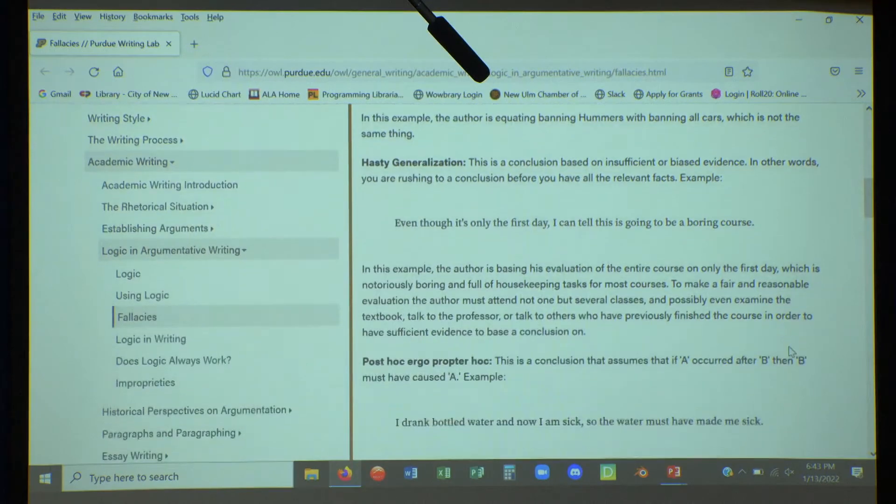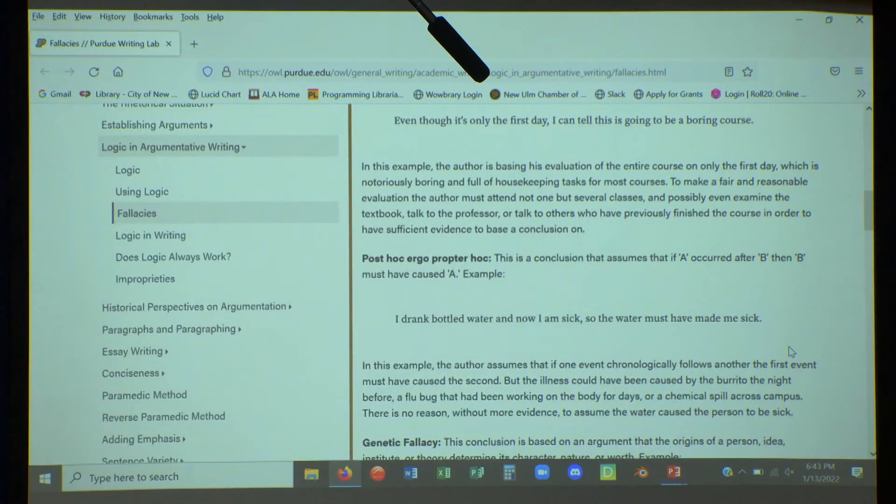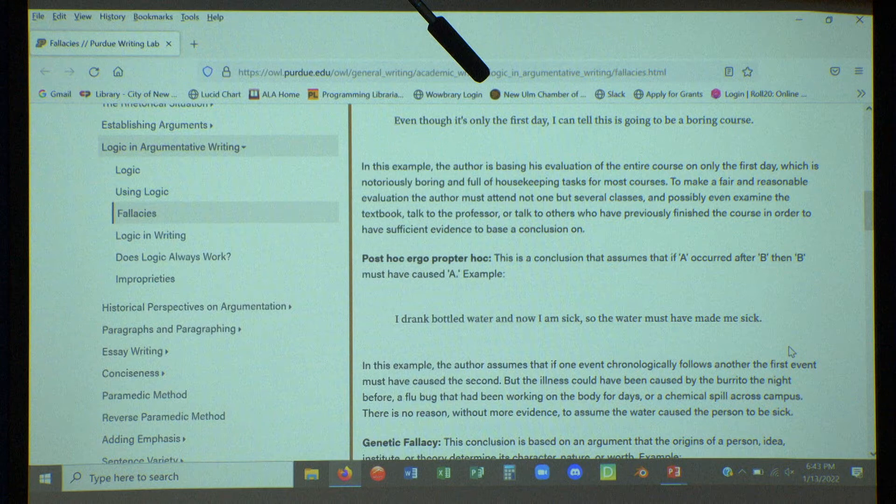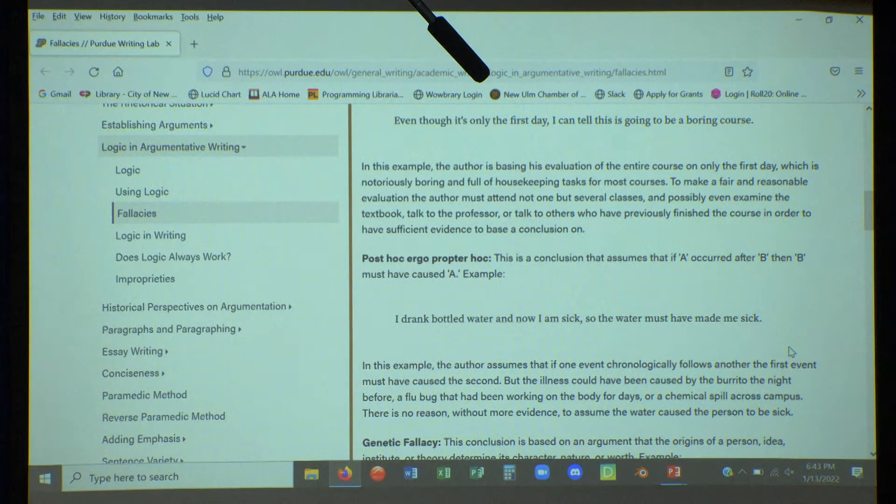Post hoc, ergo propter hoc. Because B happened after A, B must have been caused by A. And that's not necessarily true. The example they give here is: I drank a bottle of water and now I am sick, so the water must have made me sick. It could have been caused by that burrito last night, or a flu bug that's been going through for a couple days, or maybe there was a chemical spill somewhere. There are other reasons that B could have happened. It's possible that A could be the reason, but you have to evaluate it. You have to think it through and look at all of the evidence.